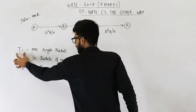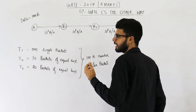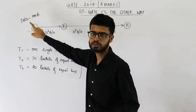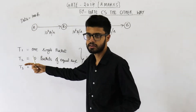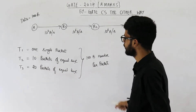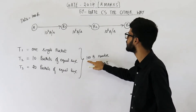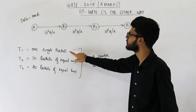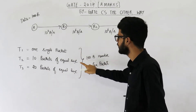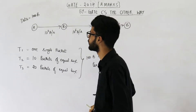Let T1 be the time taken in case one, T2 the total time taken when we create 10 packets, and T3 the total time taken in case three. On every packet there is a mandatory 100-byte header. So if you are sending one packet there will be 100 bytes of header; if you are sending 10 packets there will be 10 headers each of 100 bytes.